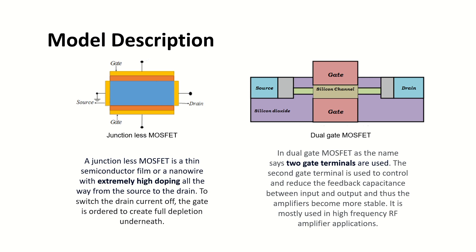It also has better scalability, meaning the MOSFET size will be reduced and precise doping is not required. Additionally, it produces lower leakage current, resulting in reduced power consumption. These are the main advantages of the junctionless FET over junction FETs.